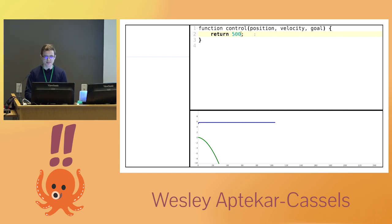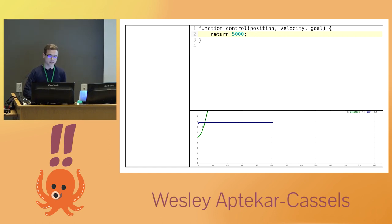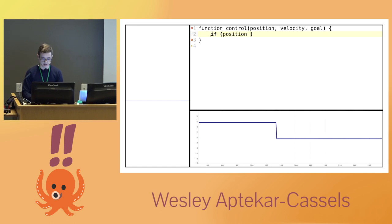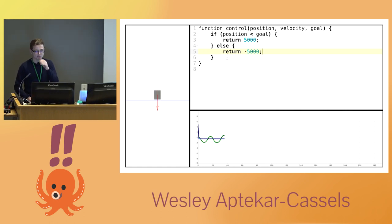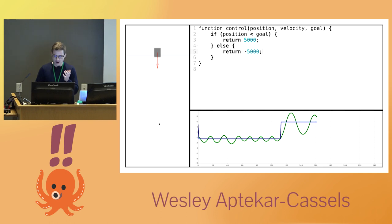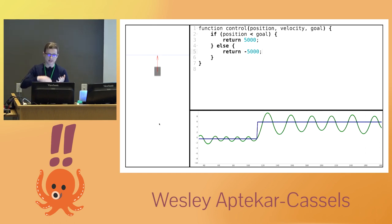If we think about the simplest thing that could possibly work — if the position is less than the goal, we return a positive value, otherwise negative. This is called, fittingly enough, bang-bang control. We can see this is doing a little bit more what we want, but it's still going to be a very scary ride — it's never quite getting where we want it to be. We can see the oscillations go up and down, but they're not consistent, just all over the place. The red arrow represents the force we're applying, and we can see it's switching back and forth very, very quickly.